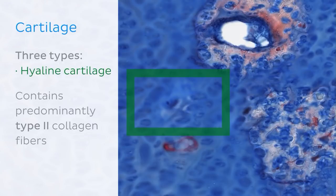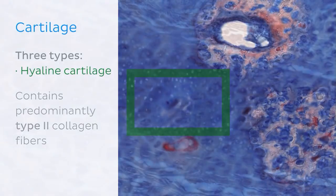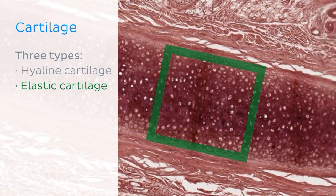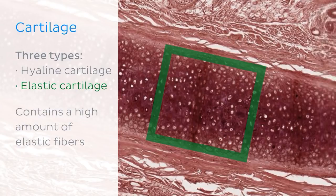Hyaline cartilage is mostly found on joint surfaces, in the respiratory tract, and is also widespread in the embryonic skeleton. The second type is known as elastic cartilage, which is histologically similar to hyaline cartilage but contains a high amount of elastic fibers, making it more pliable and distendable. This type of cartilage is mainly found in the outer ear, as shown in this image, as well as the epiglottis and the eustachian tubes.